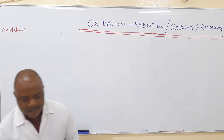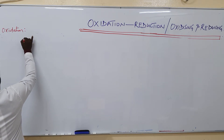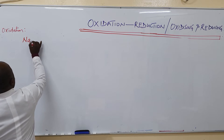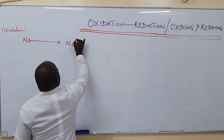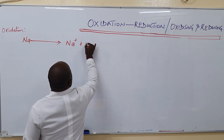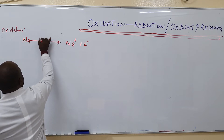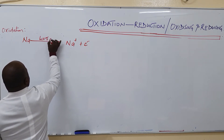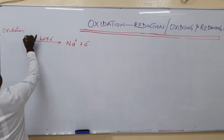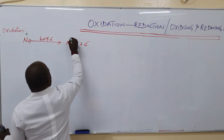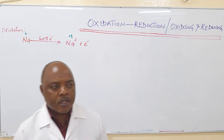For instance, we are giving you an example. Let me say sodium. Sodium produces an electron — this is an oxidation. An electron has been lost. Loss of electron.